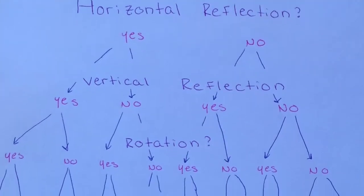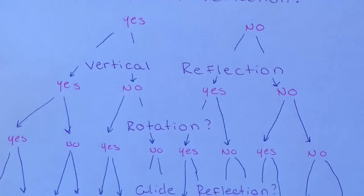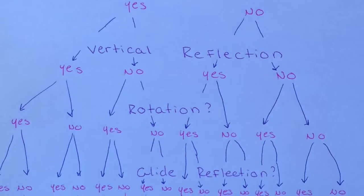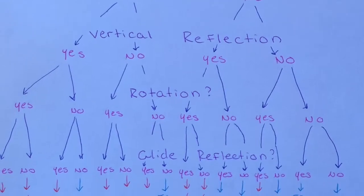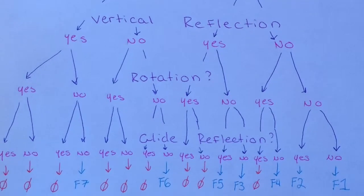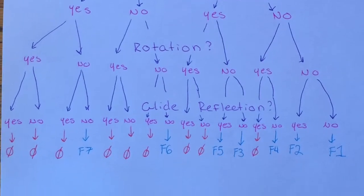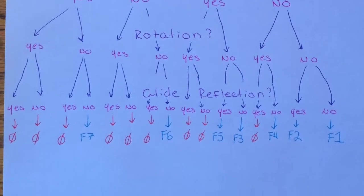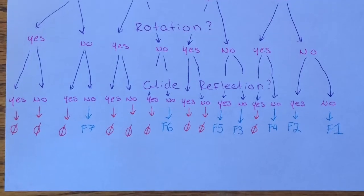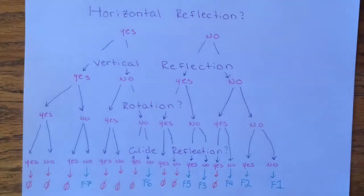Because some operators can be combined in different ways to form the same final image or the original image, there are only seven distinct frieze patterns. This simple chart clearly shows this concept, as there are only seven patterns that can be reached.